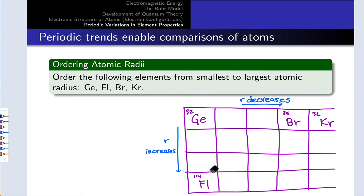This means that fluorovium must be the largest element in this series, since from fluorovium to germanium the radius will decrease, moving up, and germanium is bigger than bromine and krypton, since r decreases moving left to right across the periodic table. So fluorovium will be our largest element, followed by germanium. Bromine will be next since r decreases as I move from germanium to bromine.